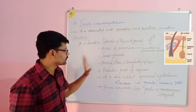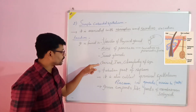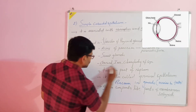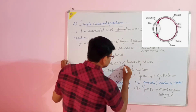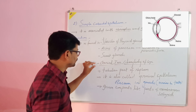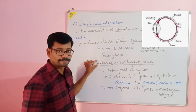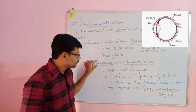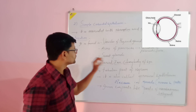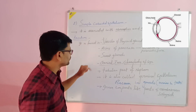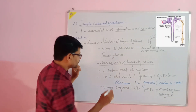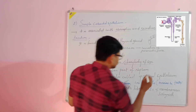Sweat glands are also made up of simple cuboidal epithelial tissue. The choroid, iris, and ciliary body of the eye are three parts of the second layer of the eye which are also made up of simple cuboidal epithelial tissue. Next is the tubular part of the nephron.